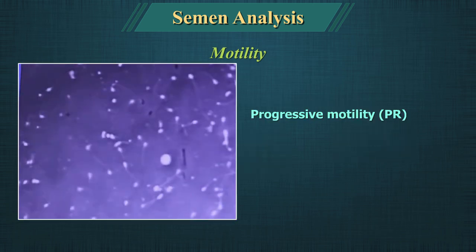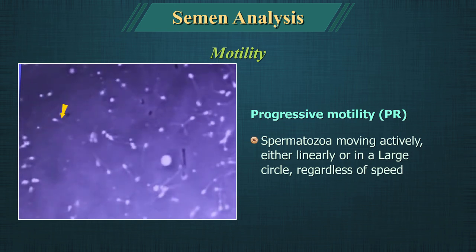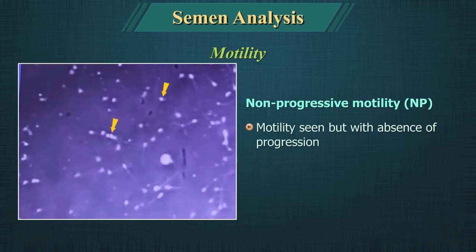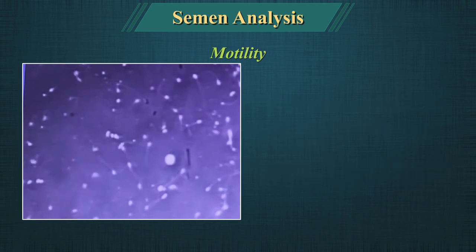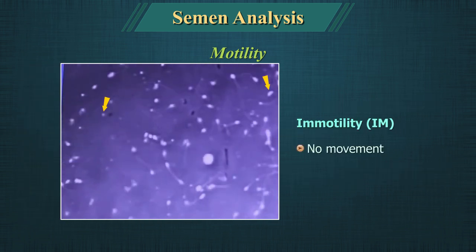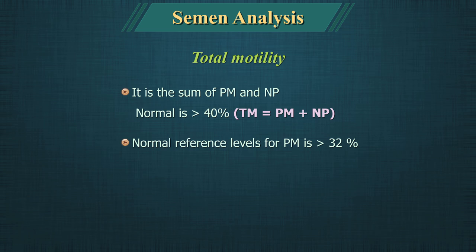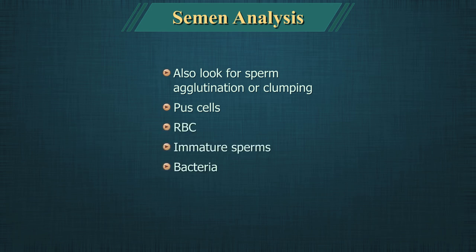Motility is graded as follows. Progressive motility: count spermatozoa moving actively either linearly or in a large circle, regardless of speed. Non-progressive motility: count spermatozoa showing motility but with absence of progression, for example moving slowly in small circles or showing only a flagellar beat. Immotility: spermatozoa showing no movement whatsoever. Total motility is the sum of progressive and non-progressive motility and should be more than 40%. The normal reference level for progressive motility is more than 32%. Also look for sperm agglutination or clumping, presence of pus cells, RBCs, immature spermatozoa, bacteria, trichomonas, etc.